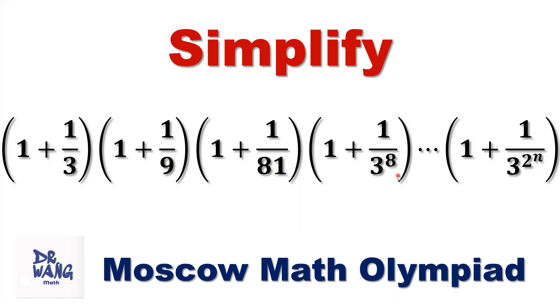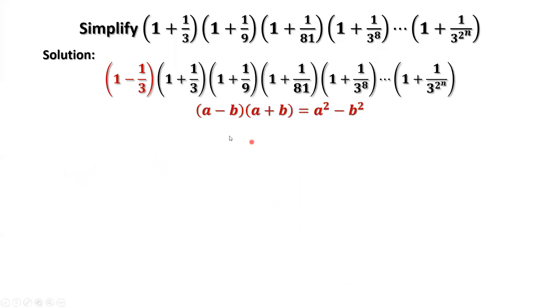How to simplify this special product? We are going to use this important formula: a minus b times a plus b equals a squared minus b squared. We are adding an extra factor here, 1 minus 1 over 3, so that we can easily apply this formula.